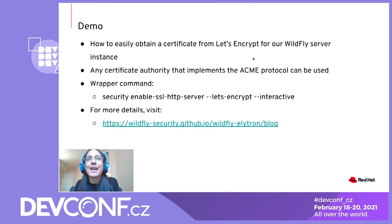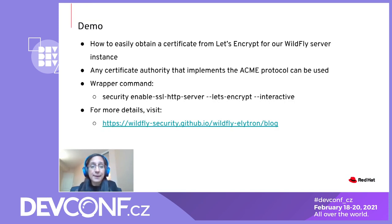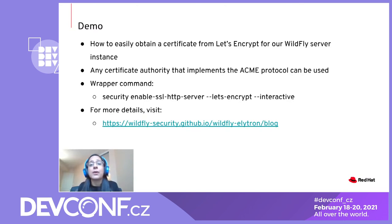We just saw how easy it is to obtain a certificate from Let's Encrypt for WildFly — and remember, any Certificate Authority that implements the ACME protocol could be used instead. We also have a wrapper command that walks you through configuring your CA account, obtaining your certificate, and configuring one-way or two-way SSL. For more details on our ACME client SPI or the WildFly CLI commands, be sure to check out our WildFly Elytron blog.